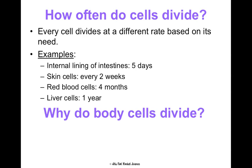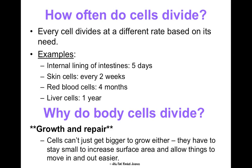Sometimes people ask why cells divide. They divide for growth and repair, but they don't just get bigger. You might wonder — if we're growing, why wouldn't our cells just be bigger? Why have trillions of cells when we could have 300 large cells? Surface area is really the answer. We want smaller cells so they have more surface area, which means more cell membrane, giving us more room for things to move in and out of the cell — which is really important for maintaining homeostasis.